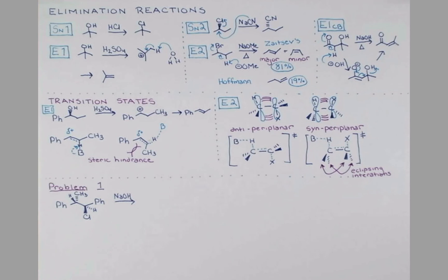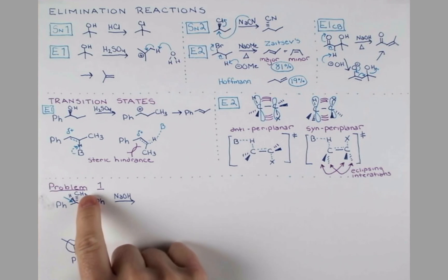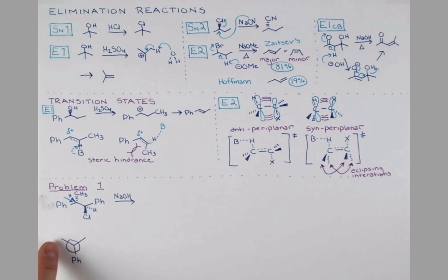Now for our Newman projection, we need to imagine we're looking down the carbon-carbon bond where the alkene is going to form. To do that, we need to look down this carbon-carbon bond. So let's draw the front of our Newman projection. So here's my front carbon, and I'm going to keep my phenyl ring pointing downward. What I'm thinking of doing is lifting this up and turning it so I can look down this bond. And now this CH3 is pointing backward into the piece of paper. So when I turn this up, it's going to be on the left side.